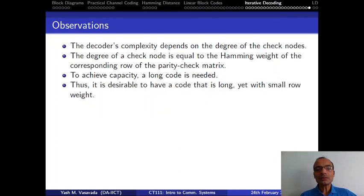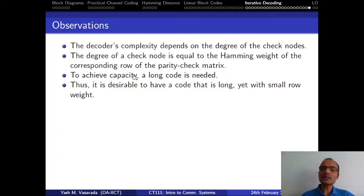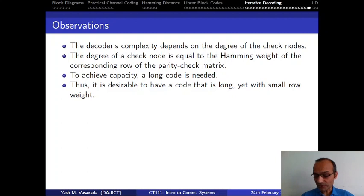It turns out that to get a channel coding scheme which works very well — in the parlance of coding theory, it is known as achieving capacity — what achieving capacity means is a coding scheme which works really well: it is able to correct a lot of errors for its rate.